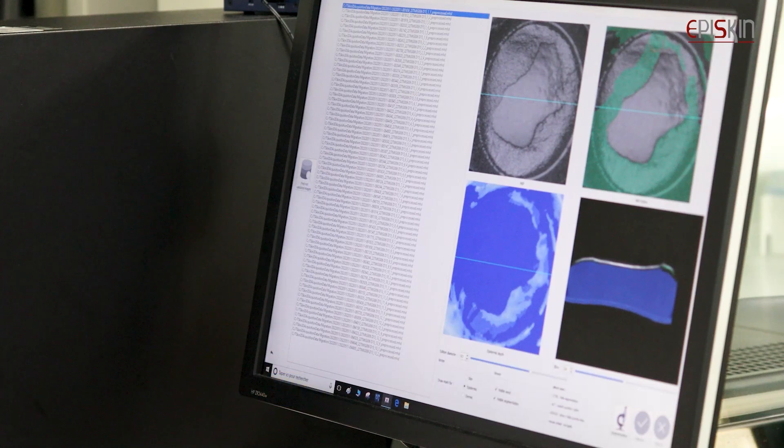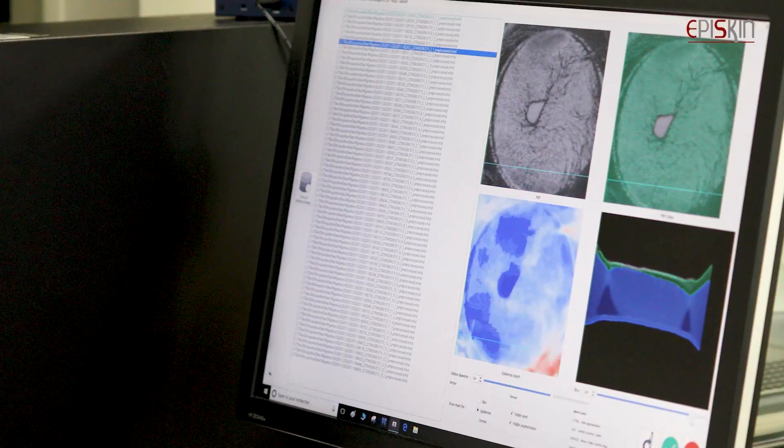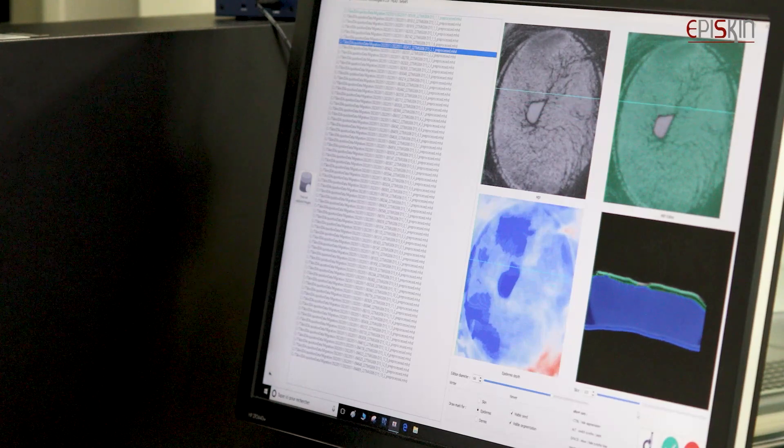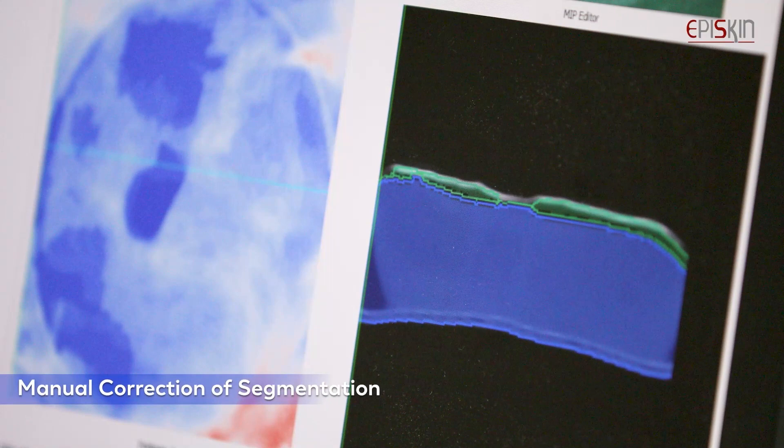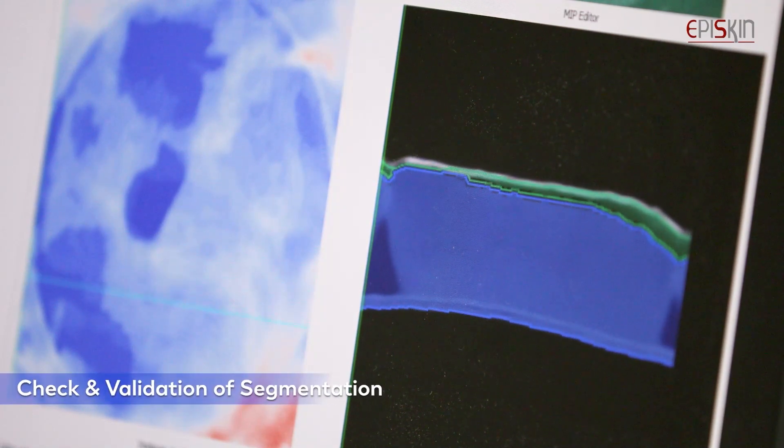A dedicated software provides us the thickness of newly formed epidermis in green, dermal thickness in blue and percentage of pore closure. During this segmentation step, a manual correction of each picture can be applied. Final checks and validation are also performed.